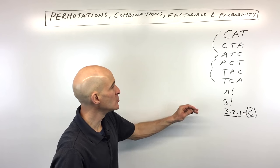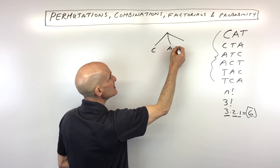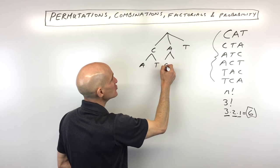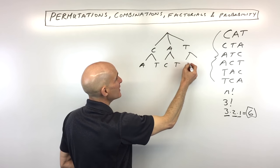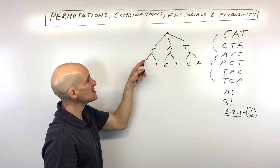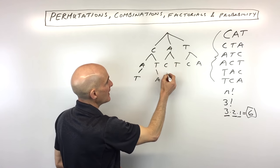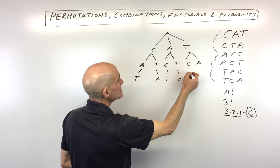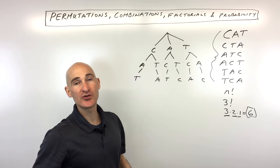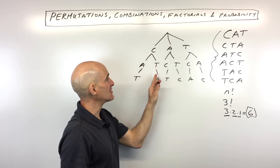Sometimes your teacher will have you draw a tree diagram. For the first letter you could choose C, A, or T. Once you choose C, you have two choices: A or T. If you choose A, you have two choices: C or T. If you choose T, you have two choices: C or A. Going down each branch, the only remaining letter fills the third position — giving combinations like C-A-T, C-T-A, A-C-T, A-T-C, T-A-C, T-C-A. Counting these routes, there are six possible outcomes.